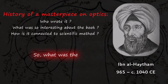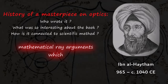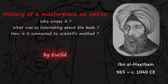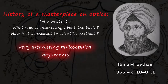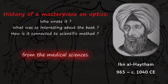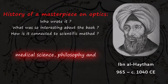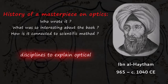What was the theory of optics which al-Haytham proposed? The most important aspect is that it combined mathematical ray arguments hypothesized by Euclid, along with philosophical arguments proposed by Aristotle. In order to explain the theory of vision, it also brought understanding from the medical sciences. So in a way it was not just a mere physics book, but an interdisciplinary book that brought in viewpoints from medical science, philosophy, and geometry to explain optical phenomena.